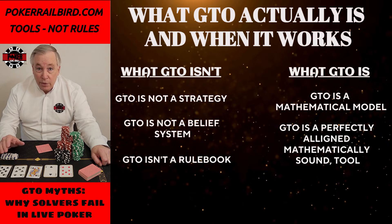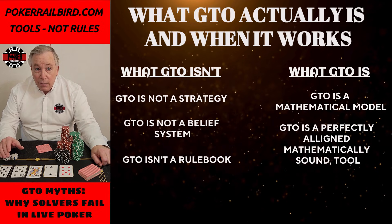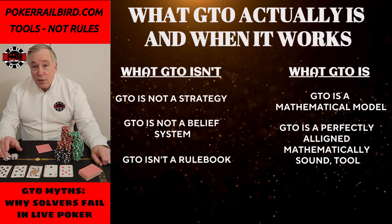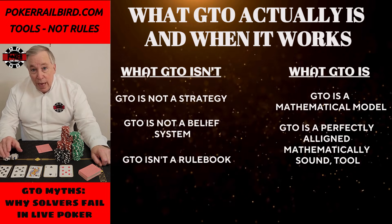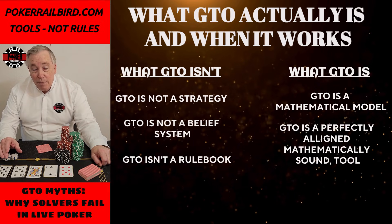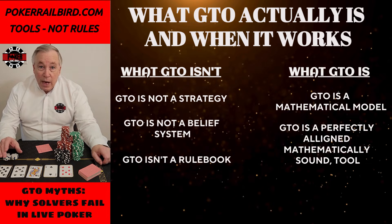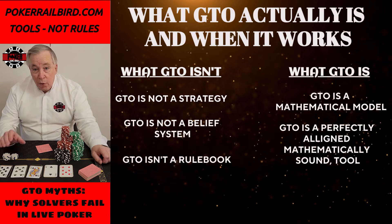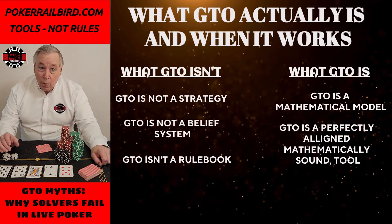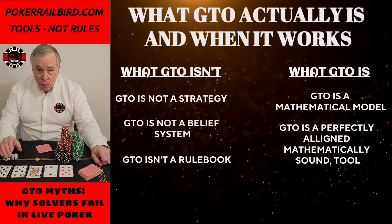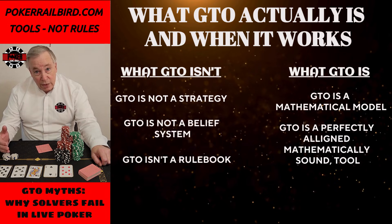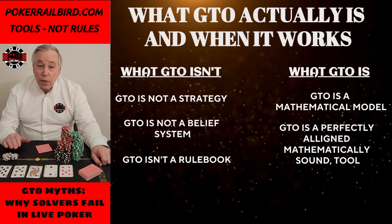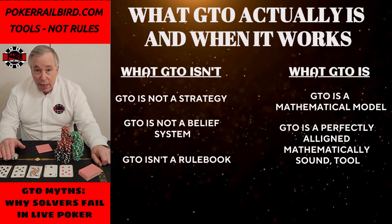If you put two disciplined, technically sound players heads up, or in a shorthanded online game where the ranges are tight, the decisions are structured, and both players are reacting logically — GTO becomes incredibly powerful. It shines when the lineup is stable, when the pot isn't going multi-way, when opponents aren't tilting, and when everyone is making consistent decisions based on ranges instead of emotions. That's why solvers dominate high-stakes online games.